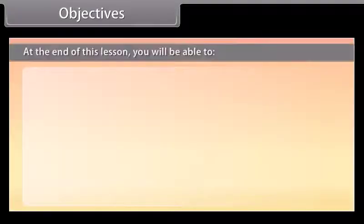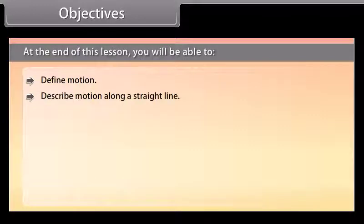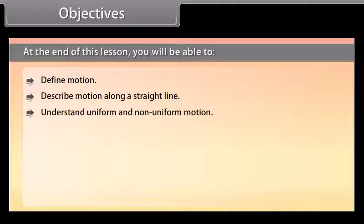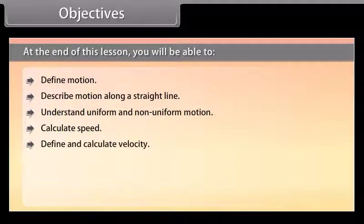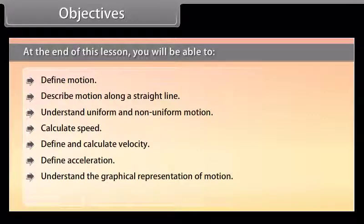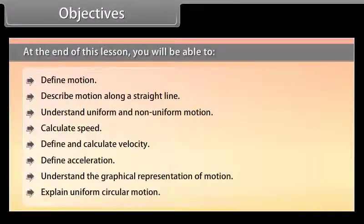Objectives. At the end of this lesson, you will be able to: Define motion. Describe motion along a straight line. Understand uniform and non-uniform motion. Calculate speed. Define and calculate velocity. Define acceleration. Understand the graphical representation of motion. Explain uniform circular motion.